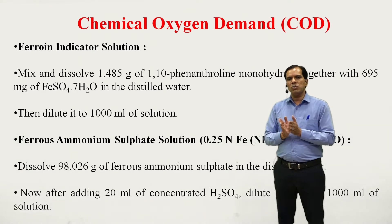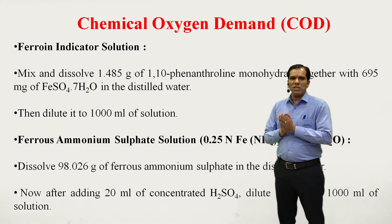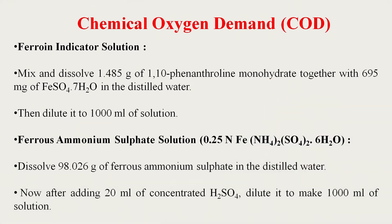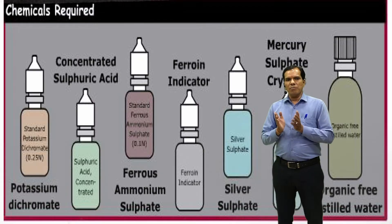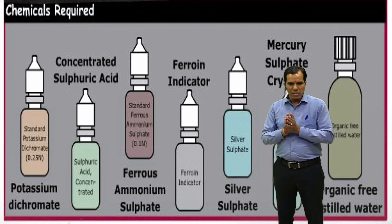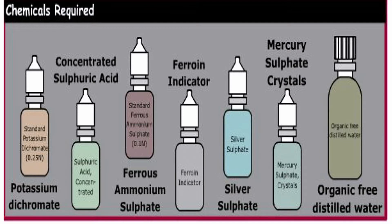The ferroin indicator is used as an indicator in this experiment. The standard ferrous ammonium sulfate solution at 0.25 N concentration is prepared by weighing 98.026 grams of ferrous ammonium sulfate in distilled water, adding 20 ml of concentrated H₂SO₄, then diluting to 1000 ml. The chemicals visible include potassium dichromate, ferrous ammonium sulfate, concentrated sulfuric acid, ferroin indicator, mercury sulfate, silver sulfate, and organic-free distilled water.